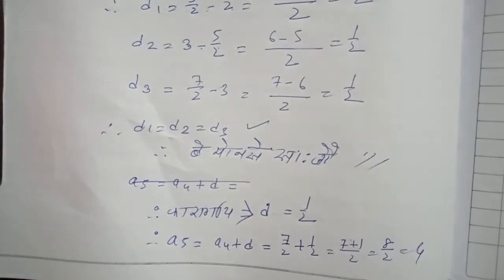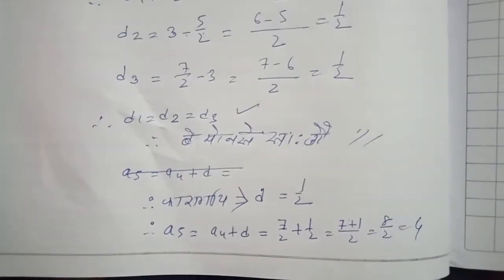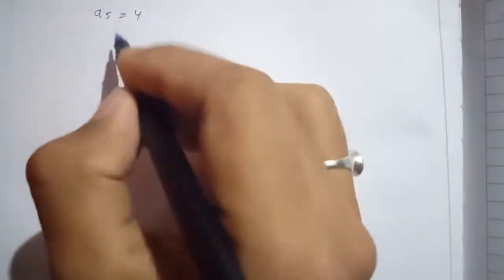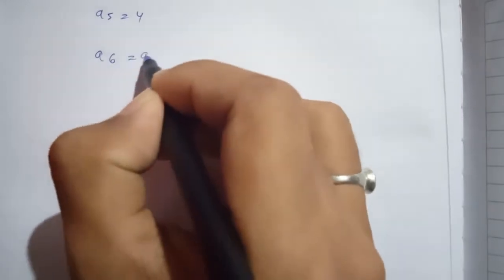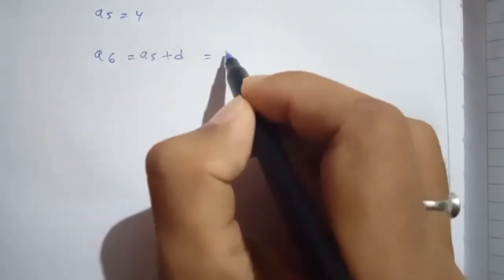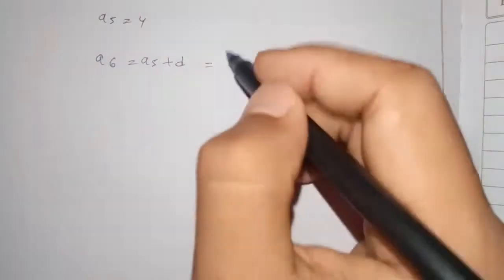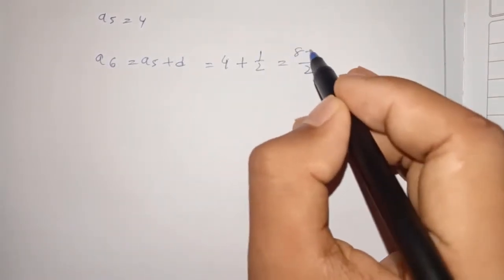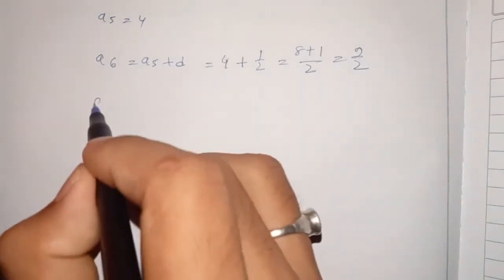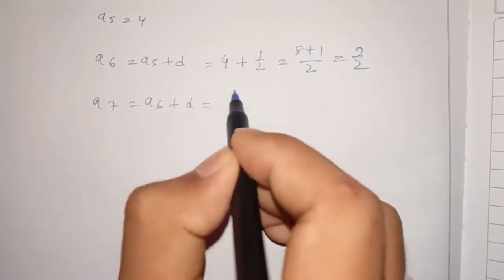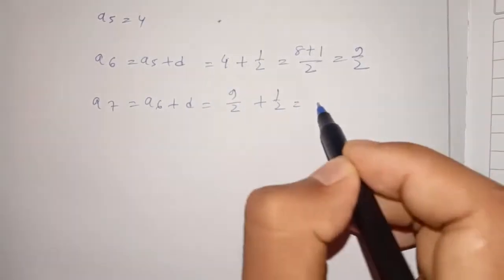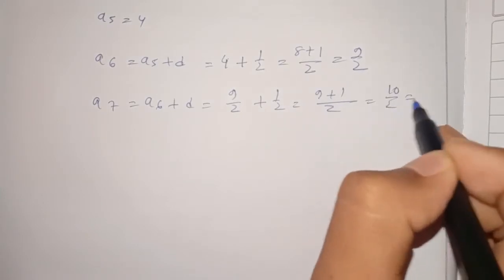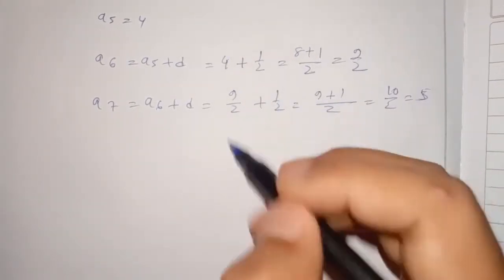A5 equal to 4. A6 equal to A5 plus D. A5 is 4 plus the common difference 1 by 2, so A6 equal to 8 plus 1 equal to 9 by 2. A7 equal to A6 plus D, that is 9 by 2 plus 1 by 2 equal to 10 by 2 equal to 5.